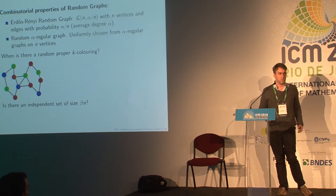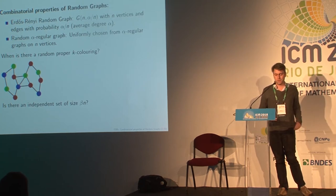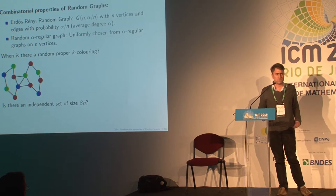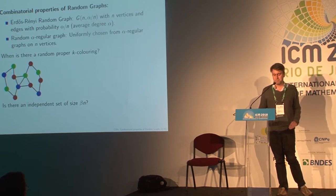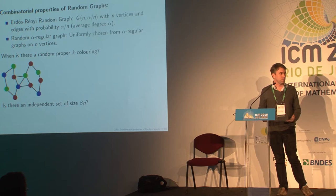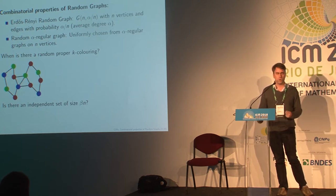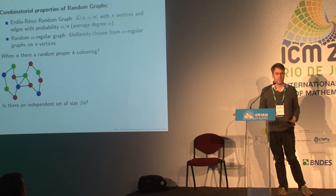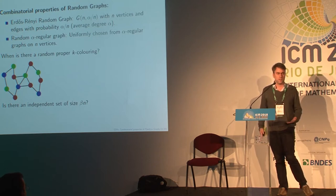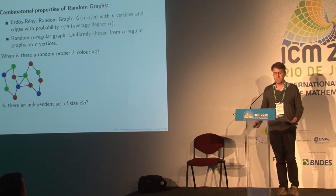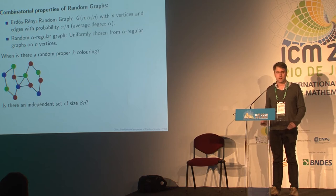Another example would be looking at large independent sets of the random graph — more of an optimization flavor. An independent set would be a subset of the vertices such that you have no edges between vertices in the set. In a coloring, the red vertices must form an independent set.